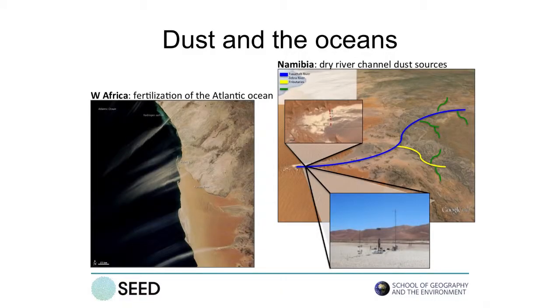The transport of material can also take on epic proportions, as you've seen already from the dust work. Here's some dust — some nutrient-rich dust plumes blowing off the western coast of Africa, fertilising the biological activity in the Atlantic. We study the mechanisms and the processes responsible for these sorts of plumes.